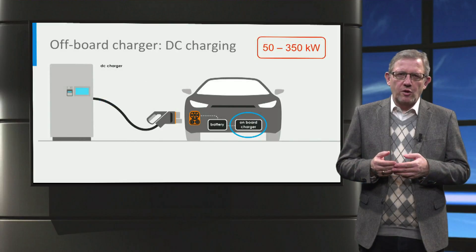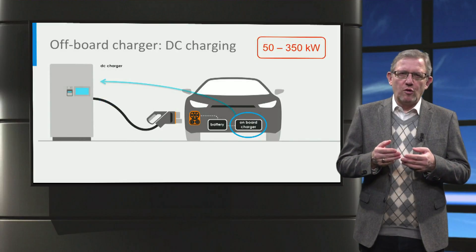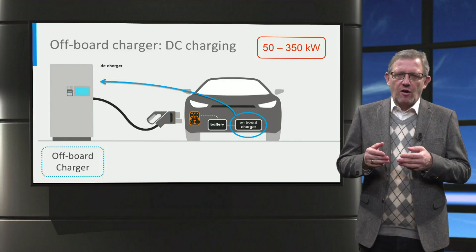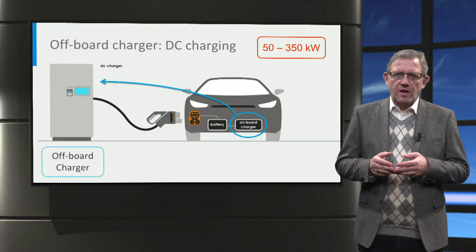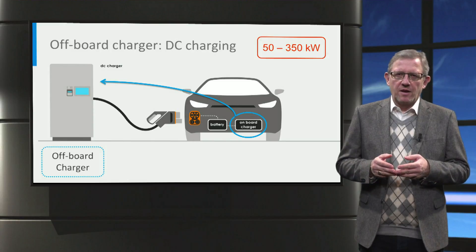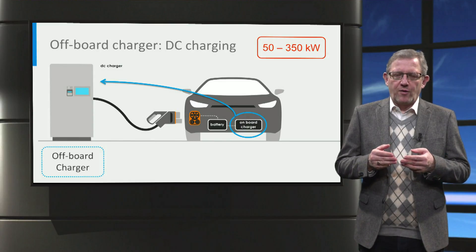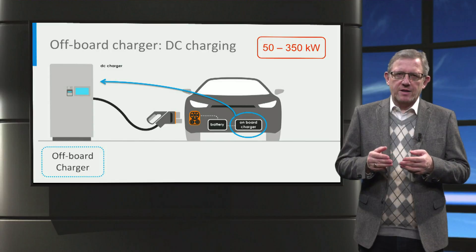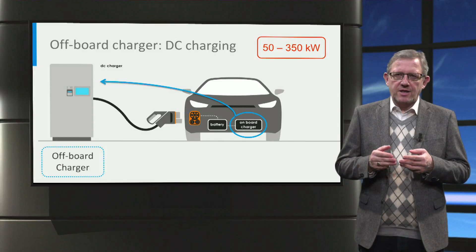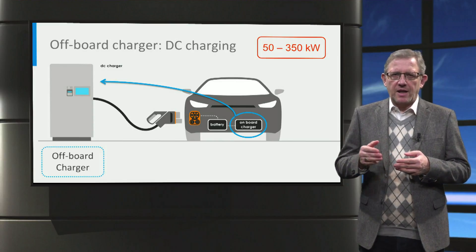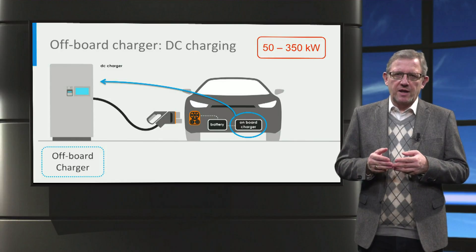Therefore, the solution to increase the charging power is to move the AC-DC converter outside of the vehicle and place it in an off-board charger. This is referred to as DC charging. With no size and weight restrictions, the off-board charger can have a maximum charging power in the order of 50 to 350 kilowatts. In the case of DC charging, the off-board charger has an AC to DC power converter and DC power is directly fed to the car via the DC charging vehicle inlet.